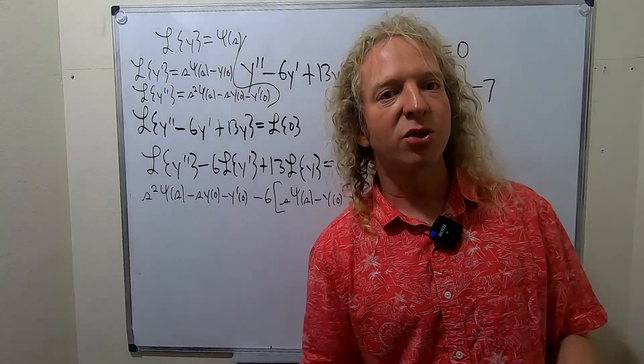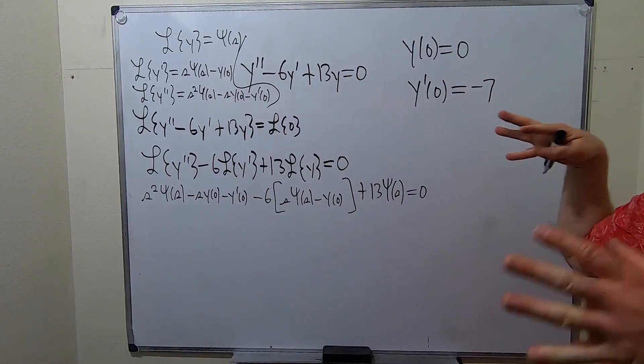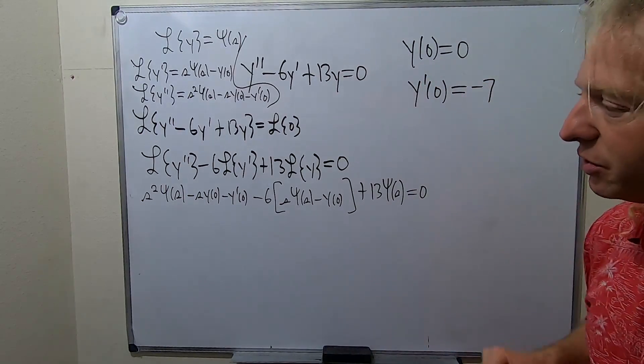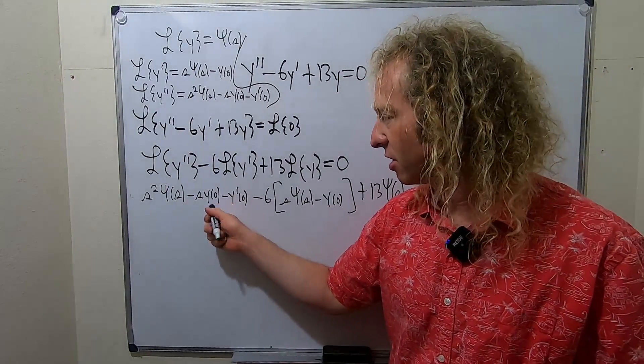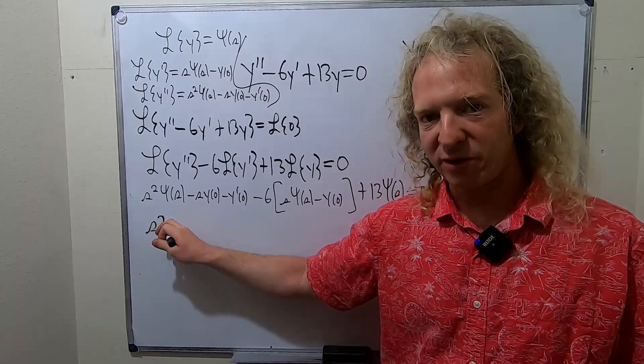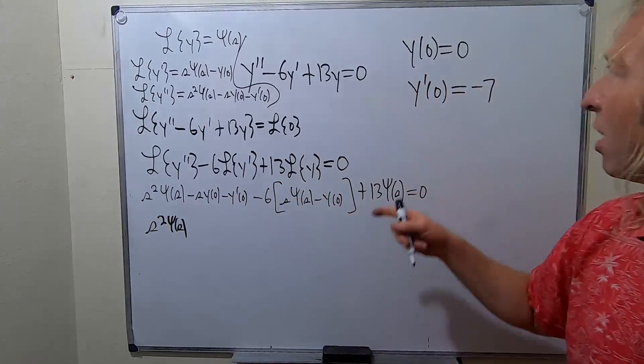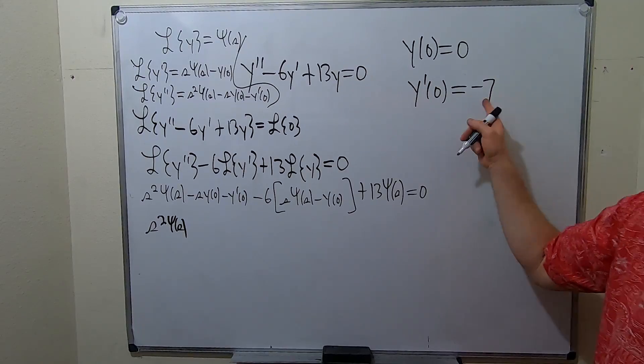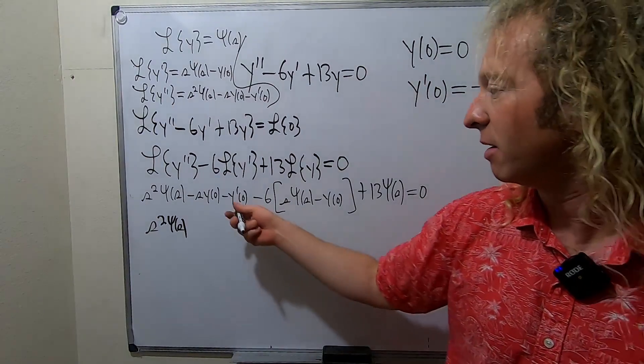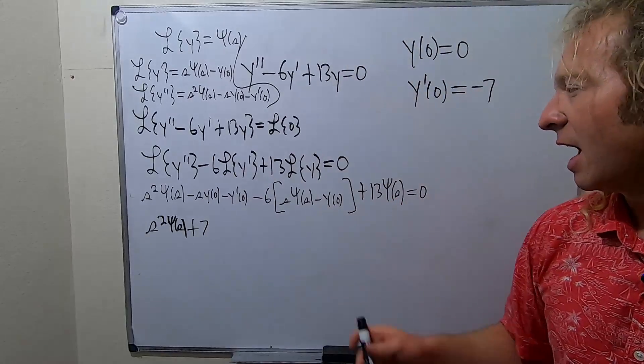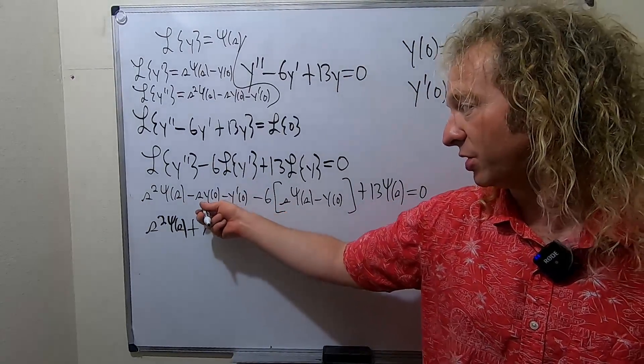Okay, so now we use the initial conditions. We impose our initial conditions upon this differential equation. So y of 0 is equal to 0. So this will vanish because this is gone. So you have s squared pitchfork y of s. This is 0. Y prime of 0 is, oh, it's negative 7. Very easy to mess up. There's already a negative here. So it'll become a plus 7. And then let's go ahead and distribute this.